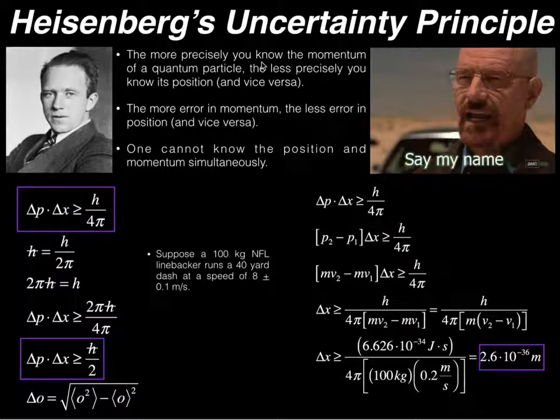The more precisely you know the momentum of a quantum particle, the less precisely you know its position. And again, you can even reverse that and say the more precisely you know the position of a quantum particle, the less precisely you know its momentum.